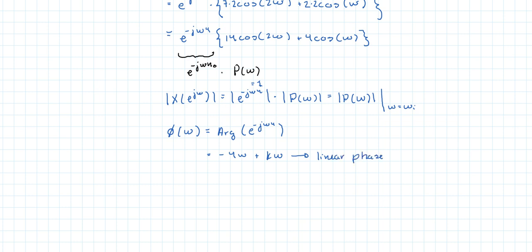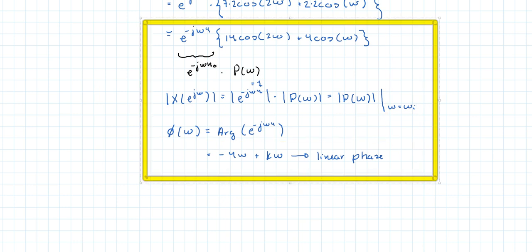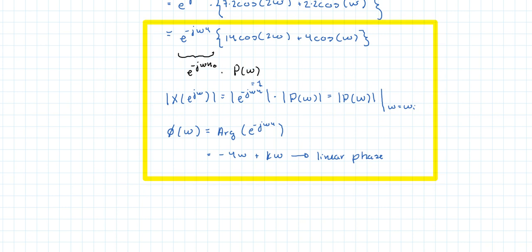So you might see this come up in linear phase finite impulse response filters and that's it. So I'll just quickly circle our answers, so we have basically all of this, and I'll put a PDF worksheet in the description. Thanks for watching.